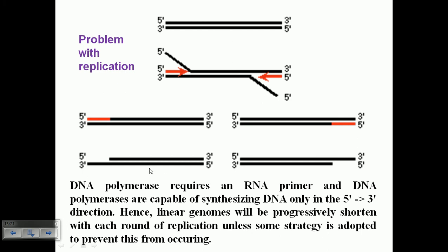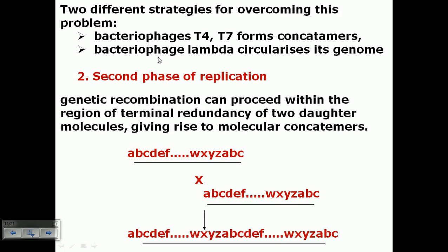To prevent gene loss, there are two different solutions. Some types of viruses undergo concatimer formation, which produces cohesive ends — just like bacteriophage lambda, which produces cohesive ends. With cohesive ends, they can easily circularize their DNA once it is injected inside the host cell. That is the solution for bacteriophage lambda.